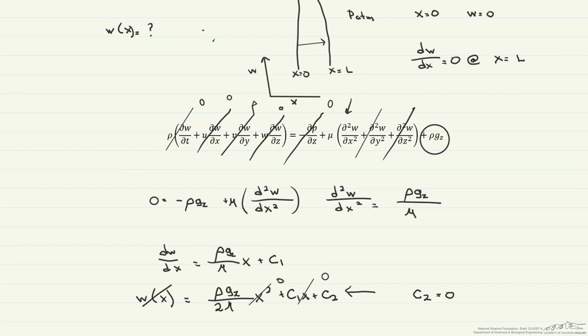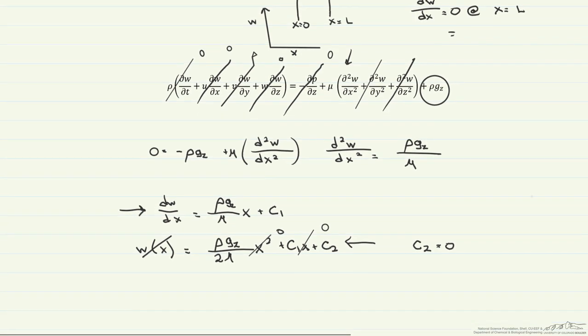Now let's put our second boundary condition here into this equation. So we have dw dx, and we're going to say that it equals zero rho g sub z divided by mu at some L plus c1. And so what that allows us to find now is our c1, which is going to be equal to minus rho g sub z divided by mu times L.